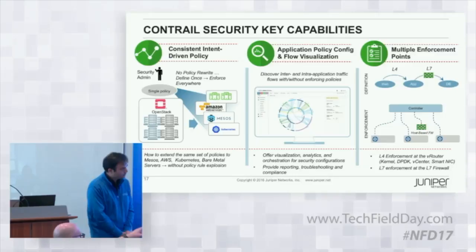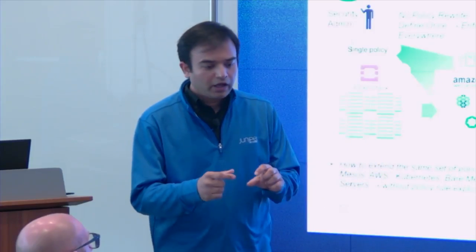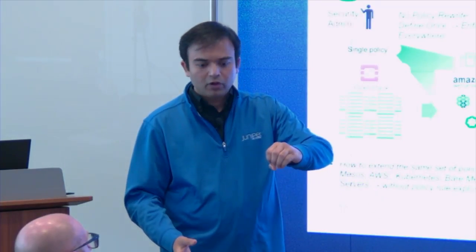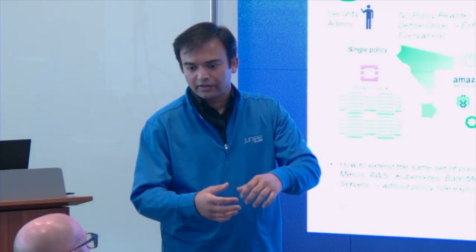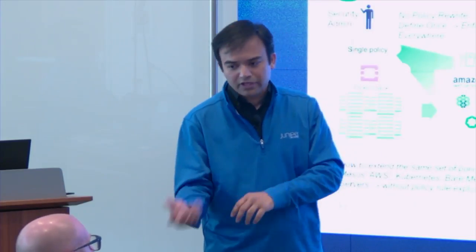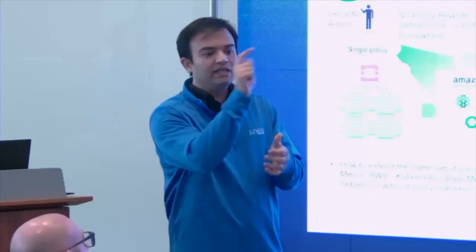Do you require host agents on endpoints? Yes. Even with Contrail Networking, to do fully distributed forwarding we needed the vRouter — to sit on the host and sit in the data path, doing forwarding, encapsulation, decapsulation, and enforcing security policies. But does it know what processes are running on endpoints? The vRouter won't know that, because it does not have visibility inside a virtual machine.